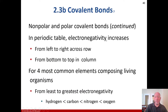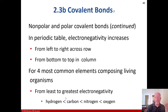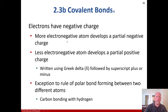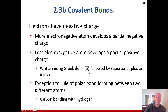On the periodic table, electronegativity increases going left to right across rows and from bottom to top of columns, making the four most common elements in living organisms — in order from least to greatest electronegativity — hydrogen, carbon, nitrogen, and oxygen. The more electronegative atom develops a partial negative charge, and the less electronegative atom develops a partial positive charge. This is written using the Greek delta followed by a superscript plus or minus. The exception to the rule — a polar bond forming between different atoms — is carbon bonding with hydrogen.